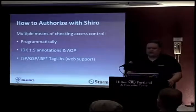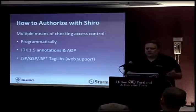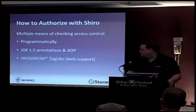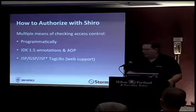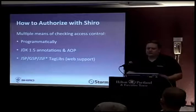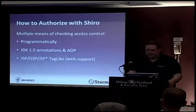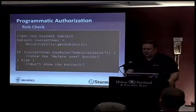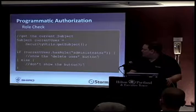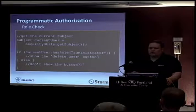How do you authorize users with Shiro? There are a few means: programmatic, where you interact with the subject; JDK 1.5 annotations that can be integrated with AOP to prevent methods from executing; and JSP/GSP tag libraries. In a simple role check, you acquire the current user and do a check — does the current user have the administrator role? If so, maybe I show the delete user button; if they don't have that role, maybe I don't show the button or I gray it out. You can change the functionality of your software or user interface based on their authorization capabilities.